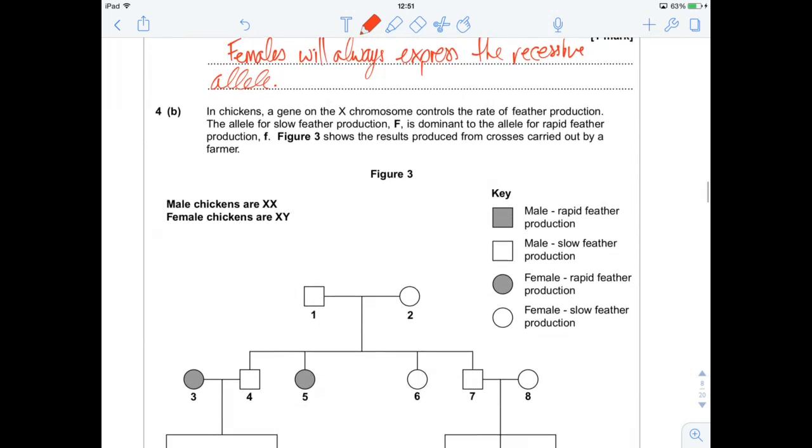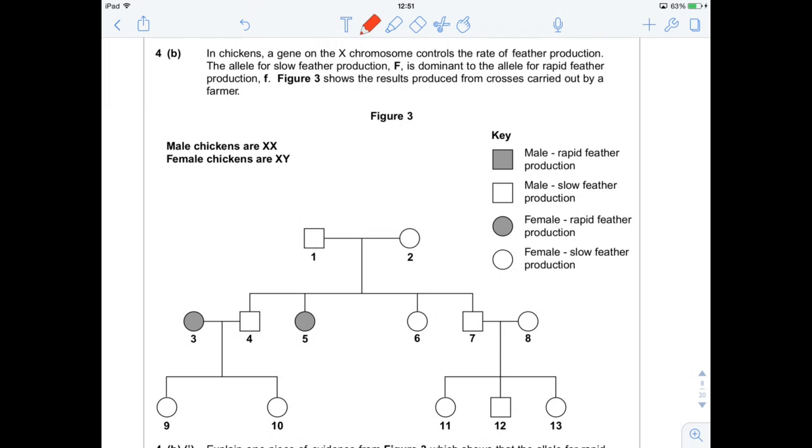The second question talks about chickens and we've got a family tree. I can't remember the special name for these off the top of my head. In chickens, a gene on the X chromosome controls the rate of feather production. I misread this question when I first did this, so I'm going to highlight the key bits to make sure I don't mess up again. The allele for slow feather production, capital F, is dominant to the allele for rapid feather production, lowercase f. Figure 3 shows the results produced from crosses carried out by a farmer.